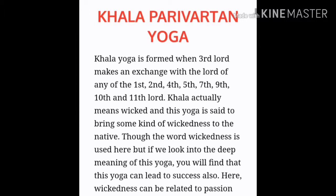Now let us understand the second type of Parivartan Yoga, called Khala Parivartan Yoga. Khala generally means wicked. Khala Parivartan Yoga is formed when the lord of the third house makes an exchange with the lord of the Kendra houses 1, 4, 7, 10, or the lord of the Trikona houses 1, 5, 9, or the lord of the second and 11th house. This yoga actually brings some kind of wickedness. But the third house is related to the efforts we put in life, so the person gains after putting in a lot of efforts. This yoga becomes auspicious but initially the person has to struggle a lot, and then eventually finds success.